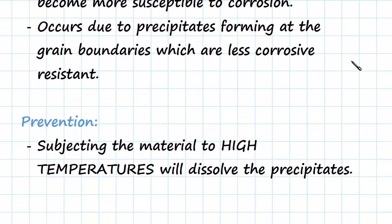So what are the preventions? What we can do is subject the material to a really high temperature, and this will dissolve the precipitates that have formed. That's our main method for protecting or preventing corrosion occurring at the grain boundary — intergranular corrosion.